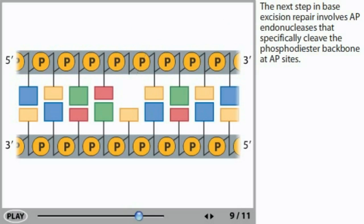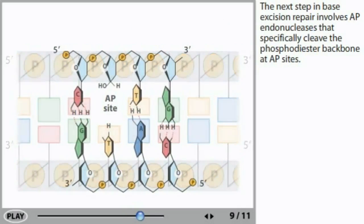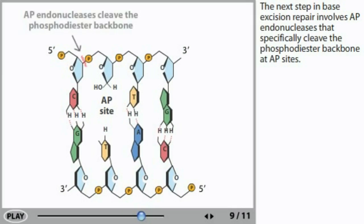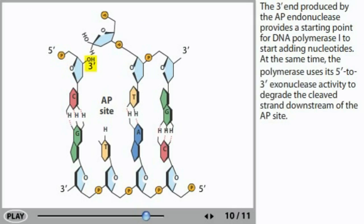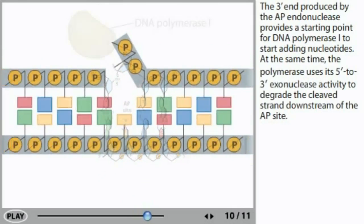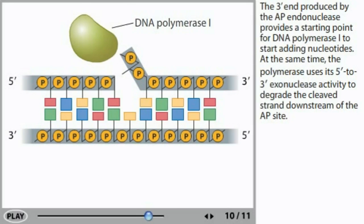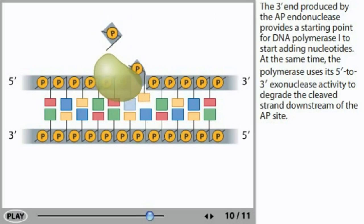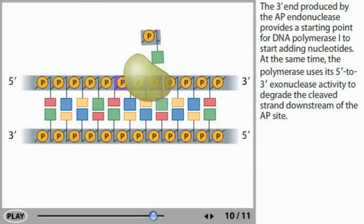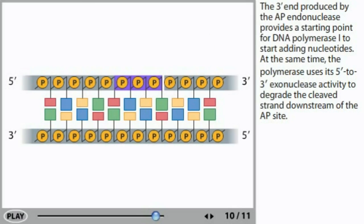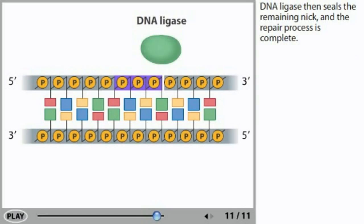The next step in base excision repair involves AP endonucleases that specifically cleave the phosphodiester backbone at AP sites. The 3' end produced by the AP endonuclease provides a starting point for DNA polymerase I to start adding nucleotides. At the same time, the polymerase uses its 5' to 3' exonuclease activity to degrade the cleaved strand downstream of the AP site. DNA ligase then seals the remaining nick and the repair process is complete.